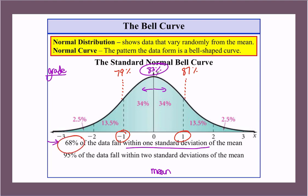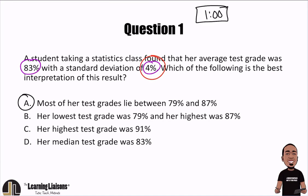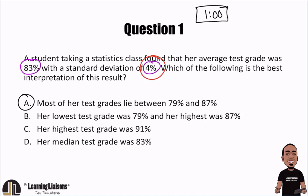So 68% of my data, or 34 plus 34, 68% of my data is in this section right there, okay? So when you take a look, most of her test grades lie between 79% and 87%. Yep, that would be true, because most of your data does lie within one standard deviation of the mean. So that would make it correct.